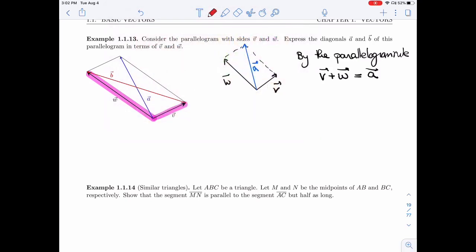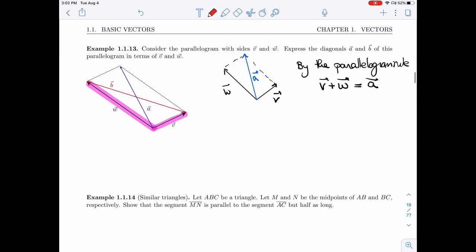Which states that the sum of V plus W is exactly this diagonal A. Another way to see it is to get from here to here, to do the A displacement, I'm going to go along V, and then I'm going to keep going along W, so I get V plus W. Remember, this one is W as well. So one of the diagonals is just the sum of the two vectors.